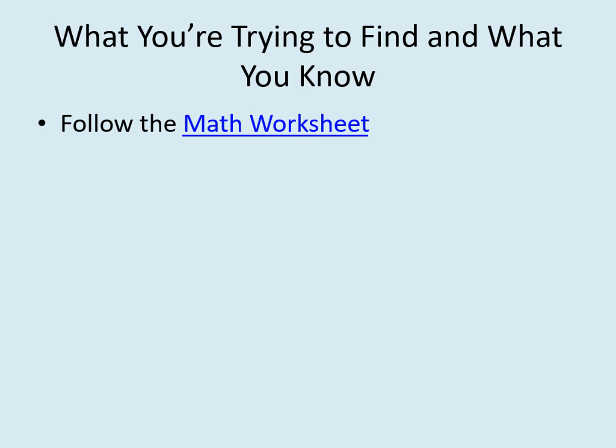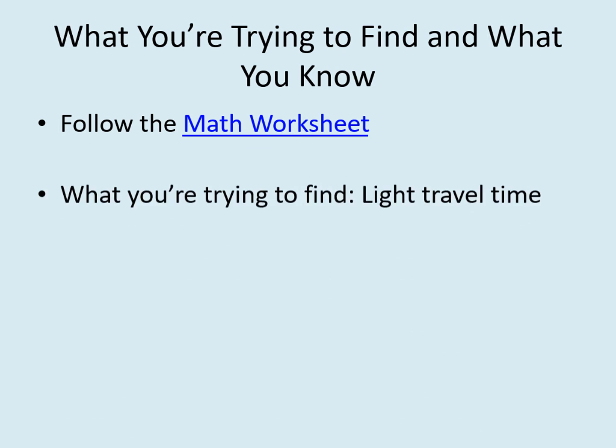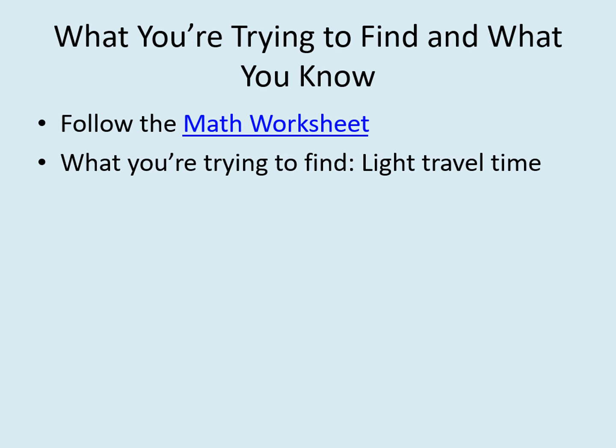We're going to follow the math worksheet and the steps covered on how to do word problems in the math online lecture. Remember that following these steps ensures that you've got all the information I'll be looking for in the assignment. The boxes labeled 'what you're trying to find' and 'what you know' are both the easiest and in some ways the most important parts of the worksheet — it's really the 'why are we doing this' part of the question. For what you're trying to find, the easy answer is just the title of the question: the light travel time. This is often the case, but it's worth thinking a minute about what that actually means.